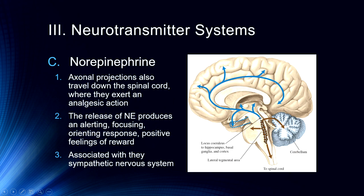Norepinephrine is another very important neurotransmitter that follows somewhat similar paths to dopamine. We have axonal projections that travel down the spinal cord where they can exert an analgesic-like action. It's one of the reasons why people abusing drugs like methamphetamine often don't experience pain the same way — those drugs cause a significant release of norepinephrine. The release of norepinephrine produces an alerting, focusing, orienting response, as well as positive feelings of reward, associated with the sympathetic nervous system. This is when you have that fight-or-flight response — you're alert, focused, paying attention, maybe a little paranoid, heart rate is increased. Drugs called sympathomimetics mimic this response by releasing norepinephrine.